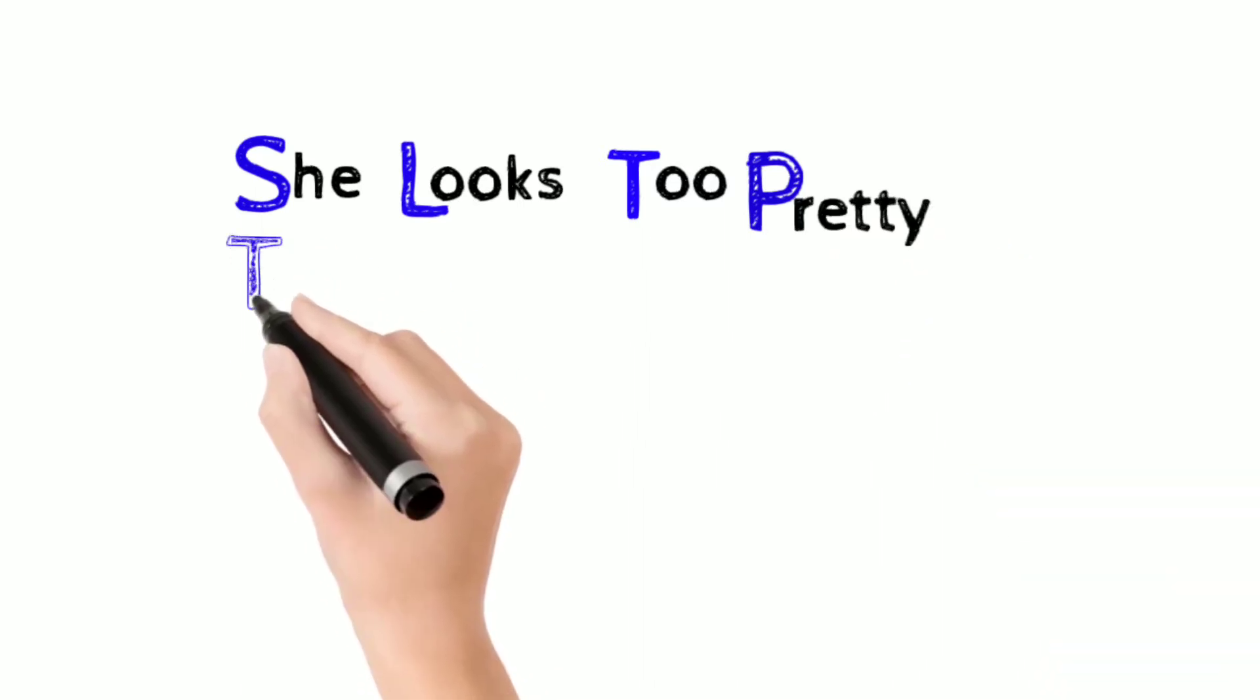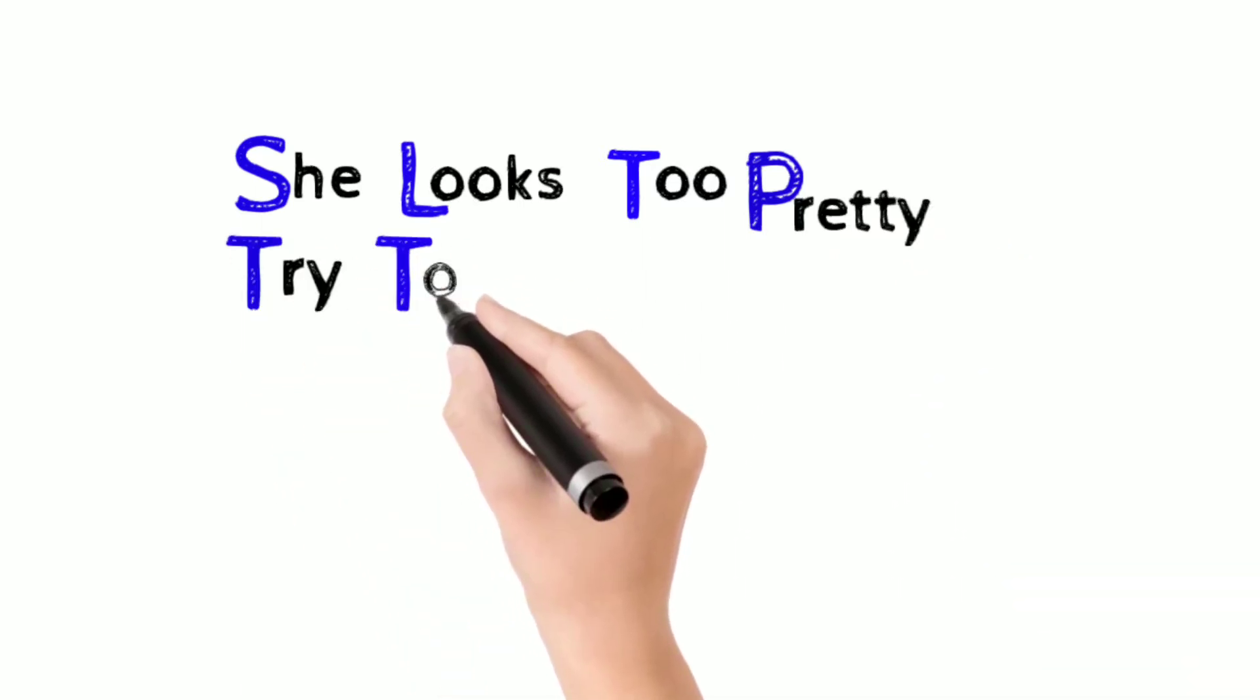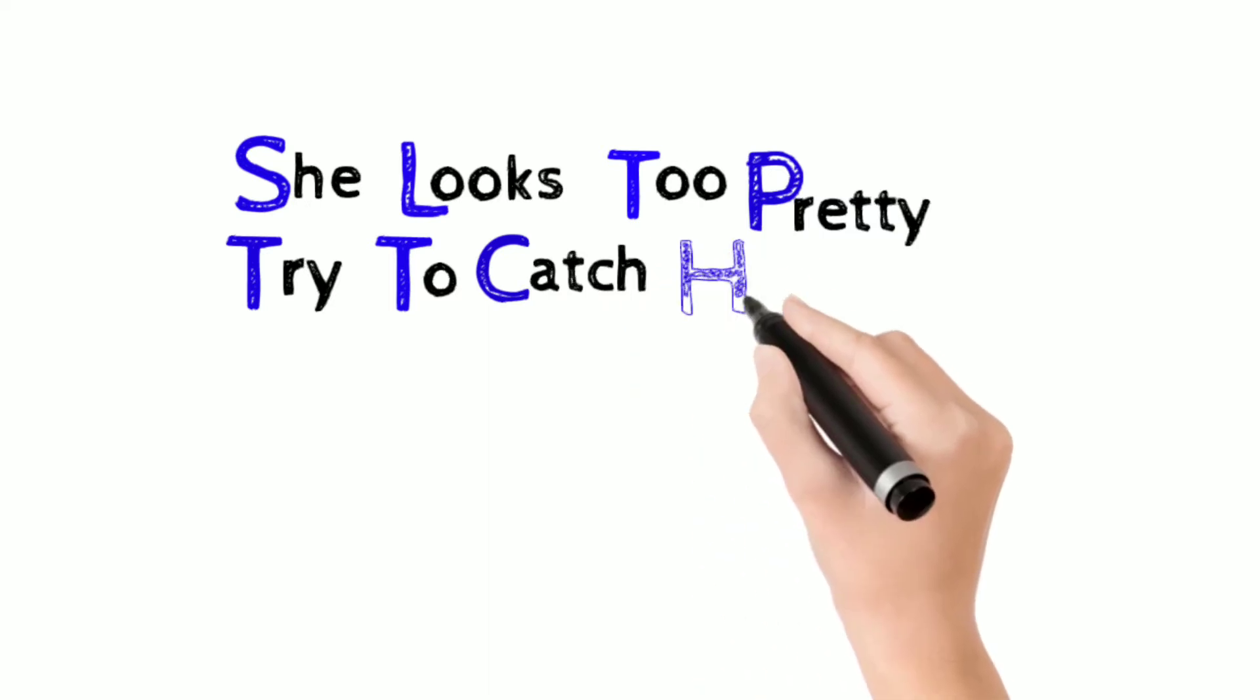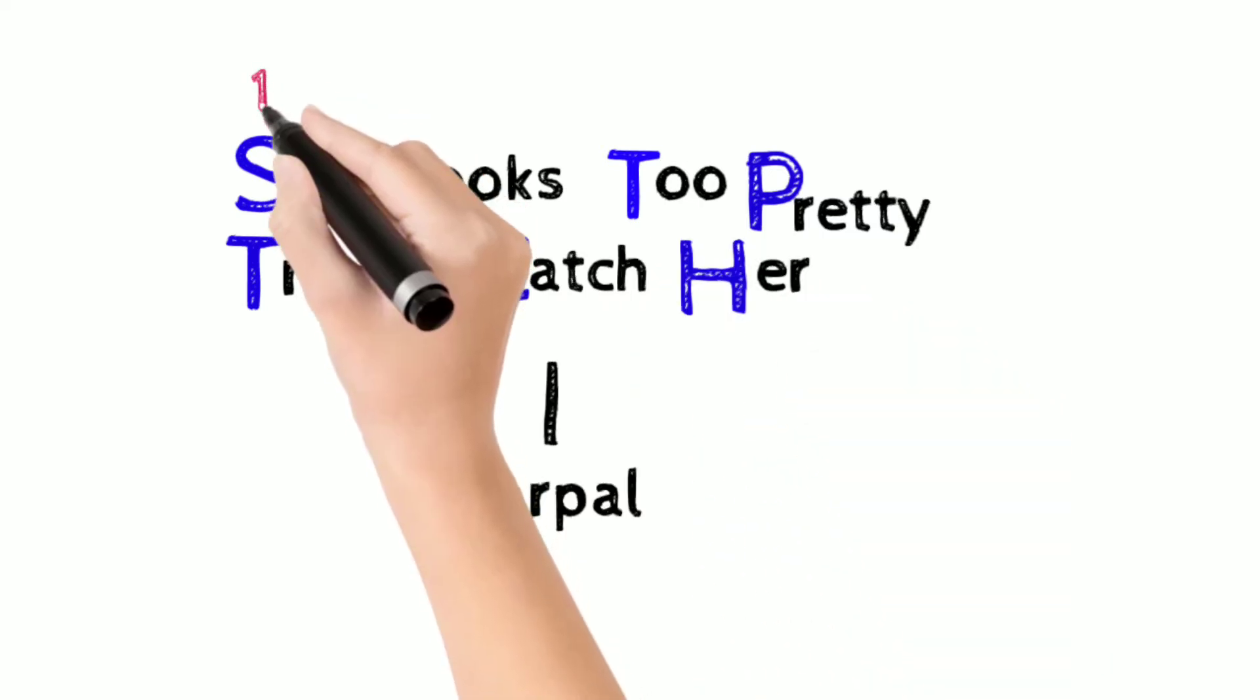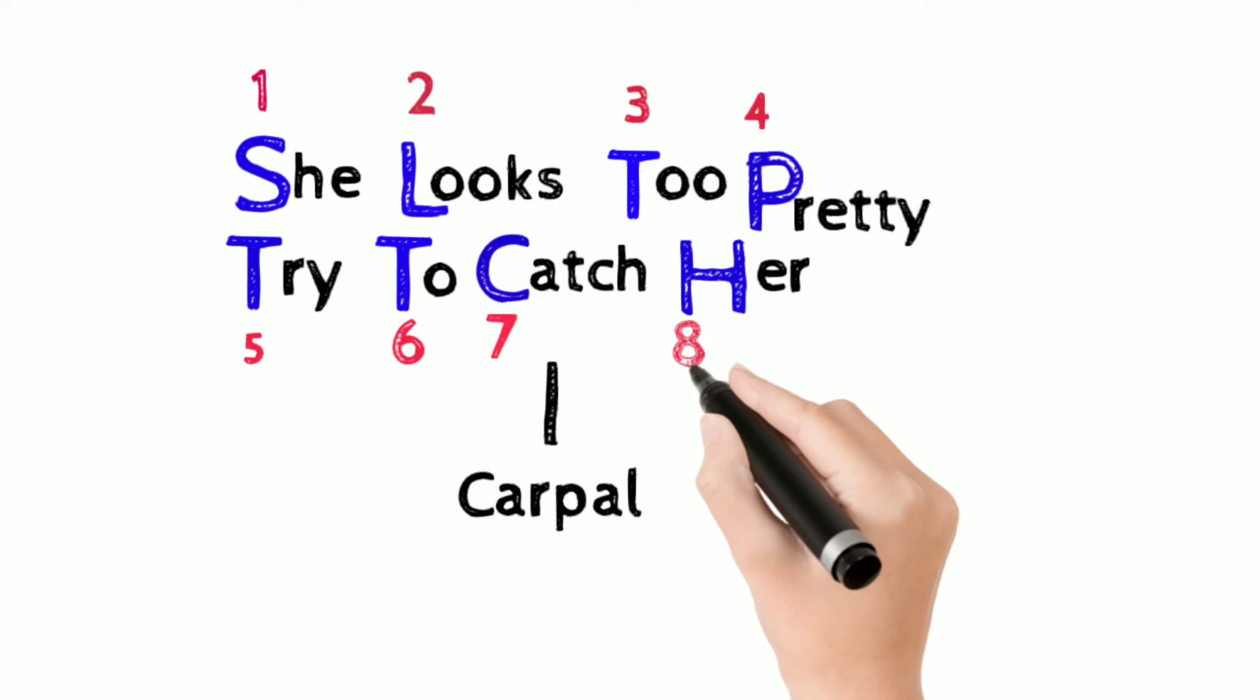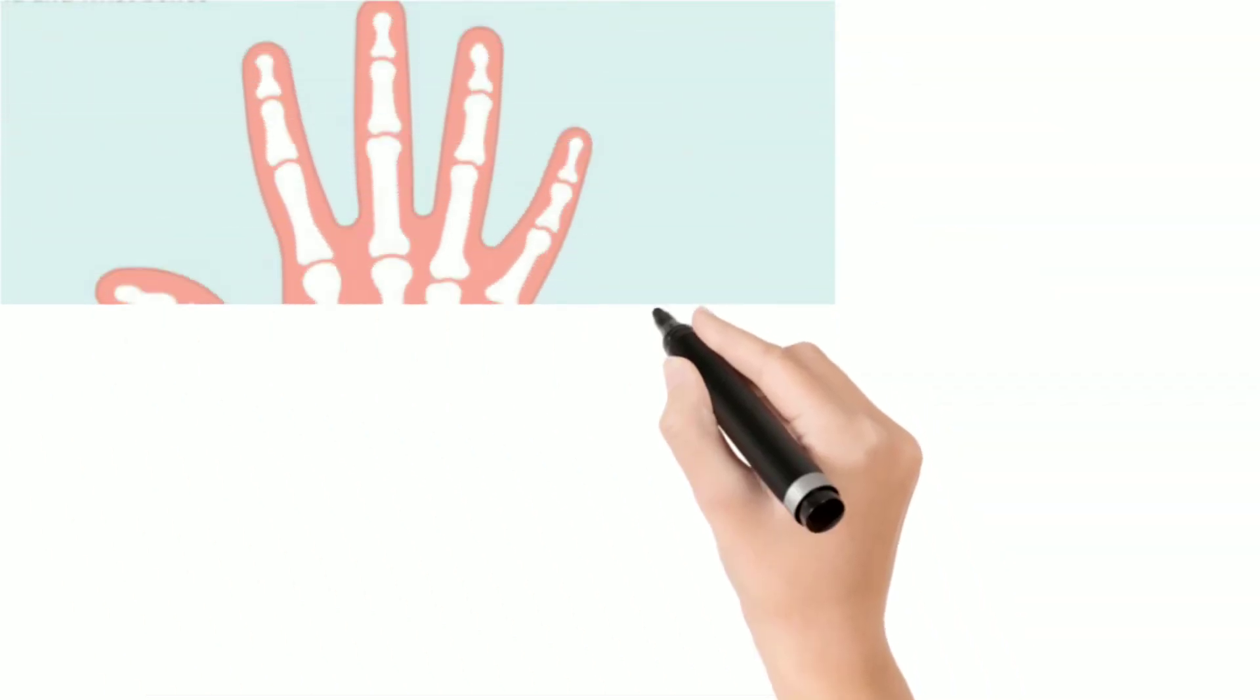So there is one phrase: 'She looks through pretty, try to catch her.' The first four words are for the proximal row, the lower four words are for the distal row.